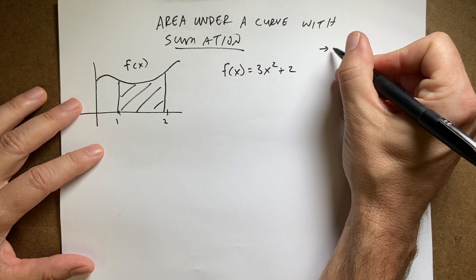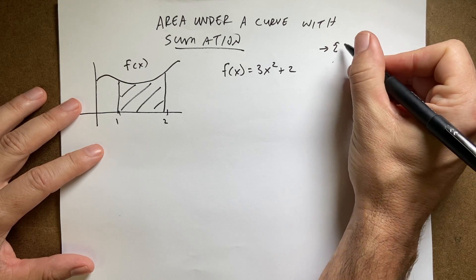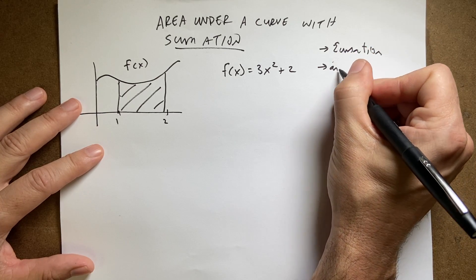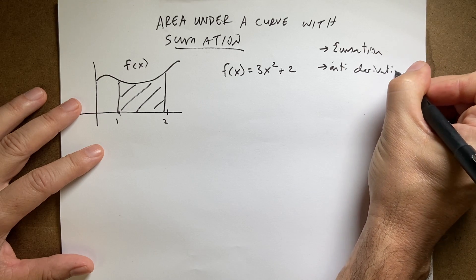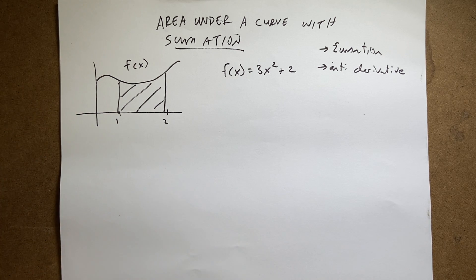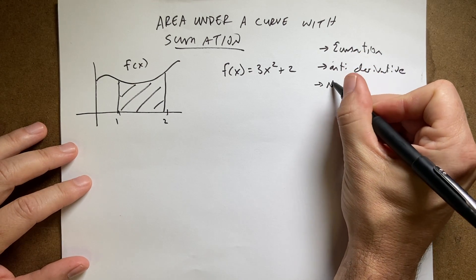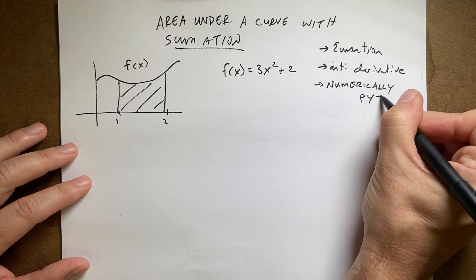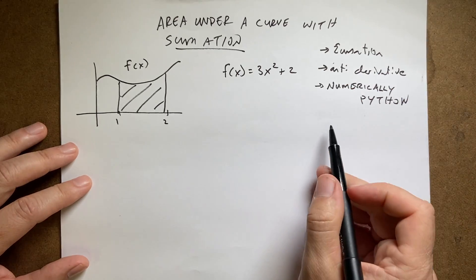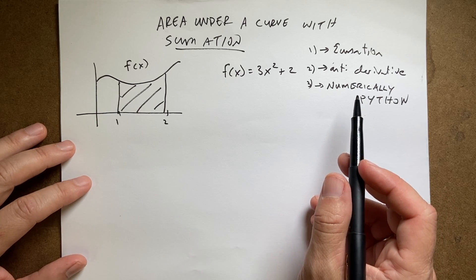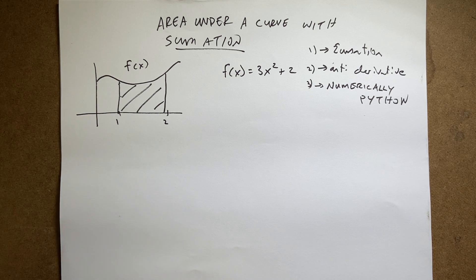There are actually three ways to do this. There's the sigma summation, there's the anti-derivative — and I've talked about that in a previous video; the idea that a derivative is related to area under a curve does kind of blow my mind — and finally we can do this numerically with Python. I'll do the same problem three different ways. The numerical Python approach gives you a lot of advantages because you don't even need to have an actual function; you can just deal with data.